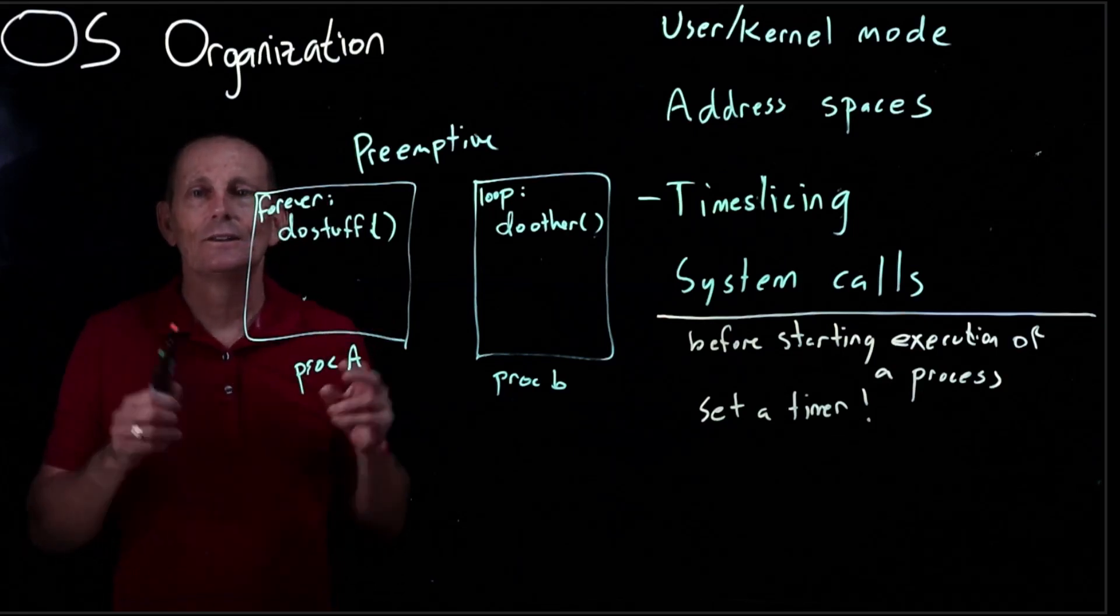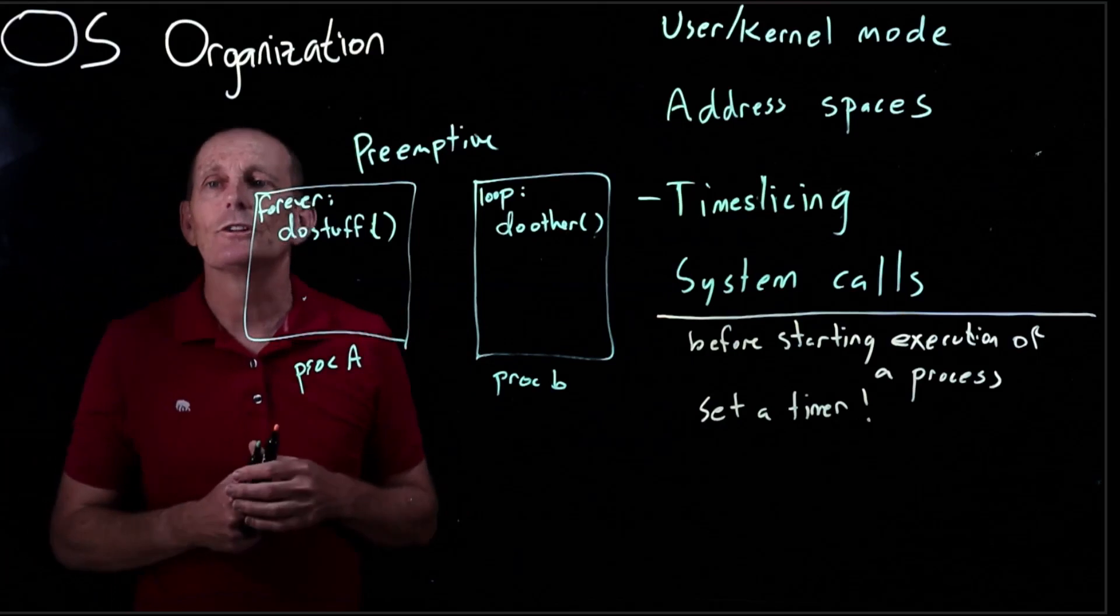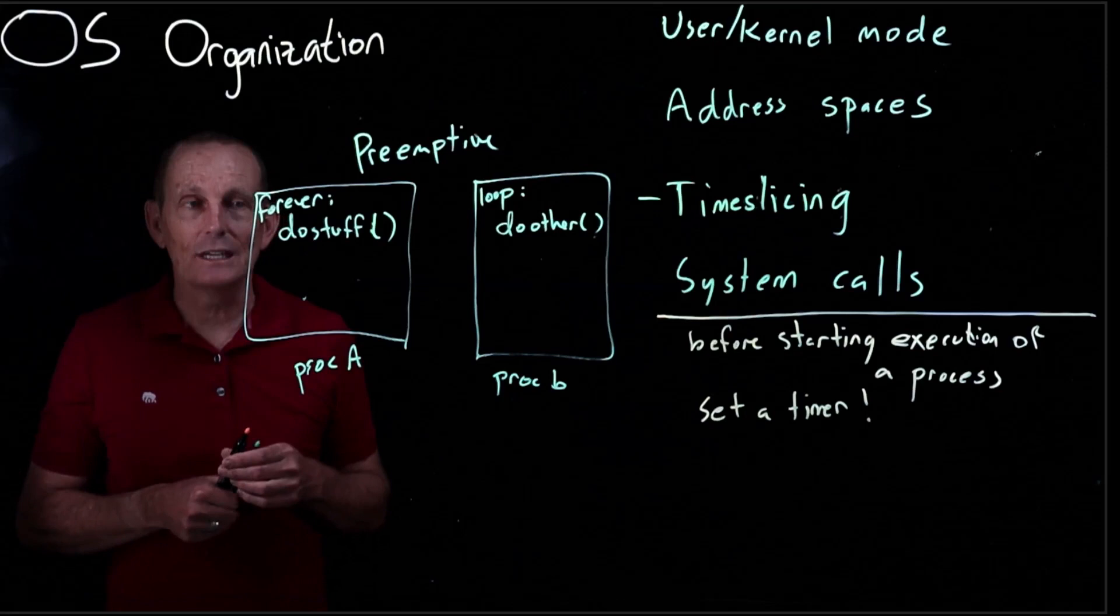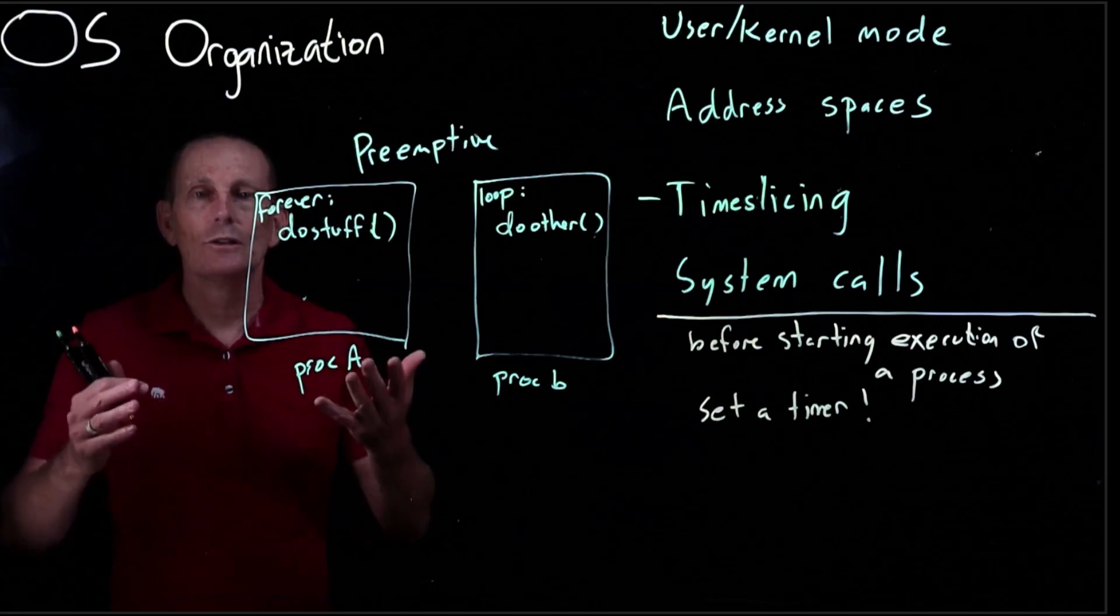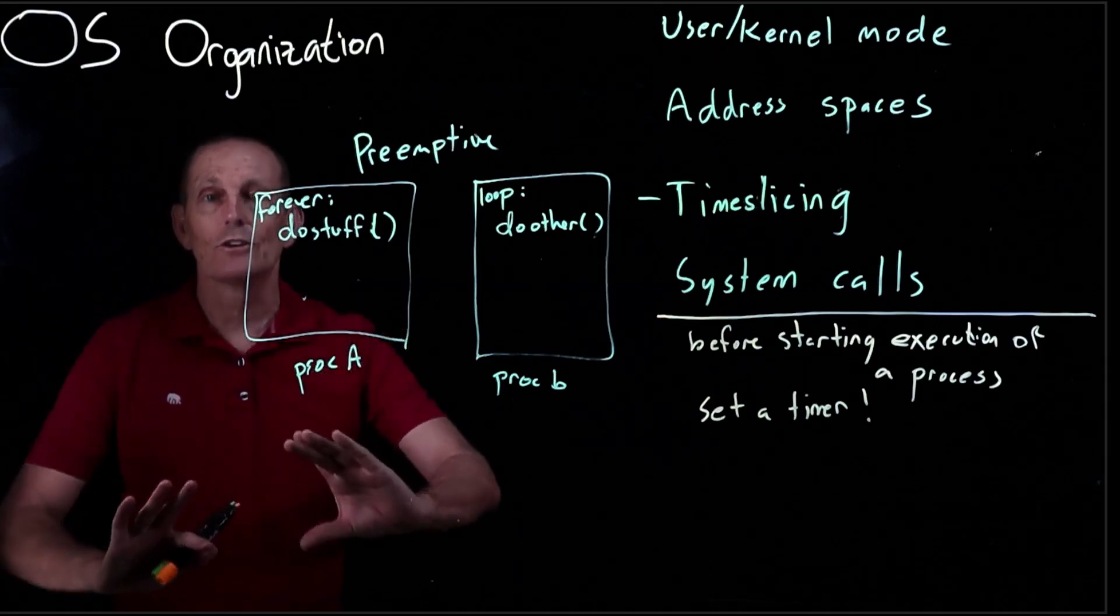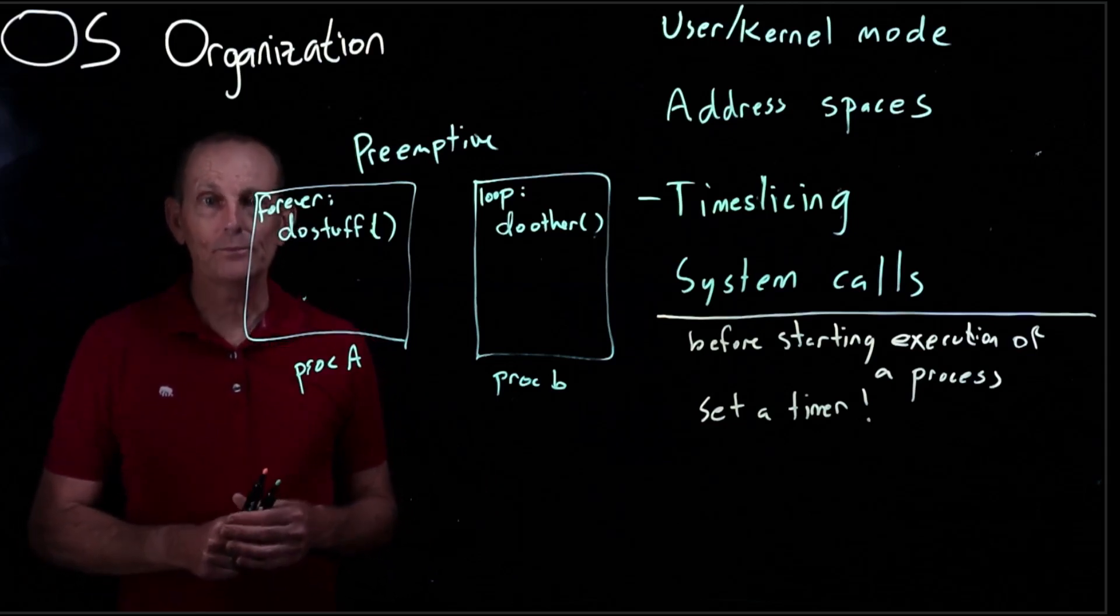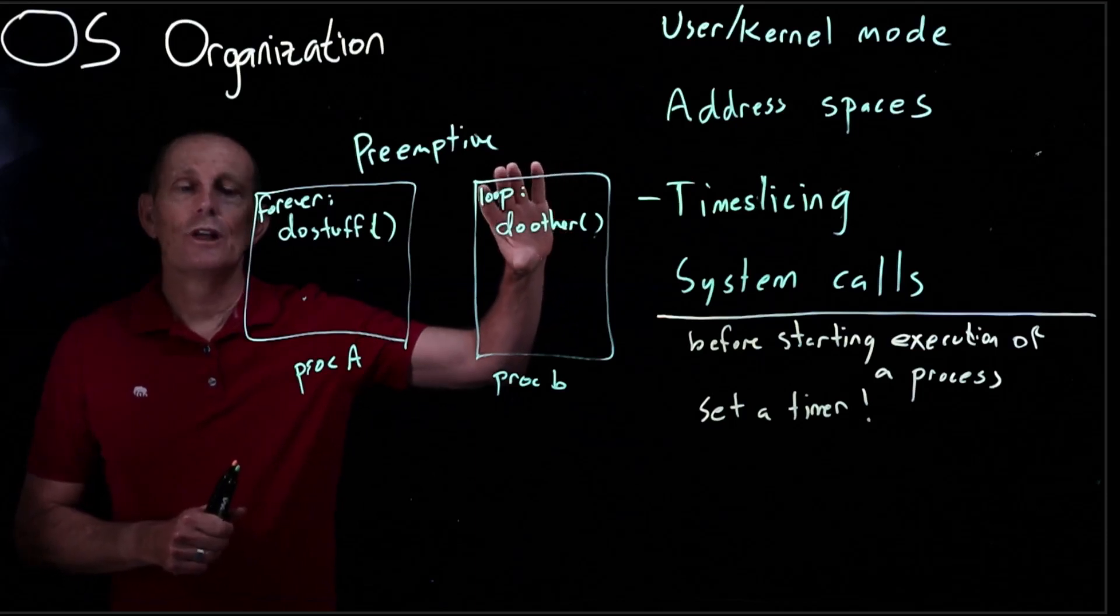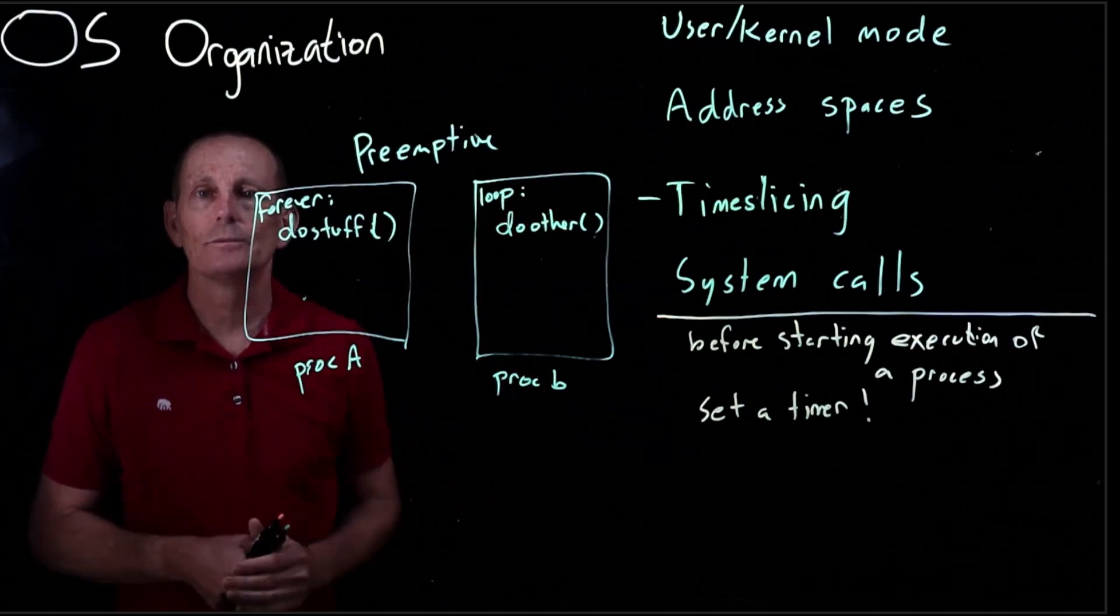So that demystifies the magic by which the kernel gets access again when a user program is running. It gets access because either the user program has made a system call which by definition means the kernel gets control or because the kernel had preset a timer to ensure that if the process took too long again the kernel would regain control.